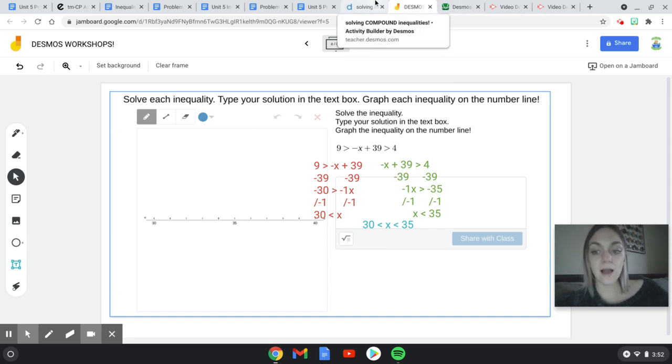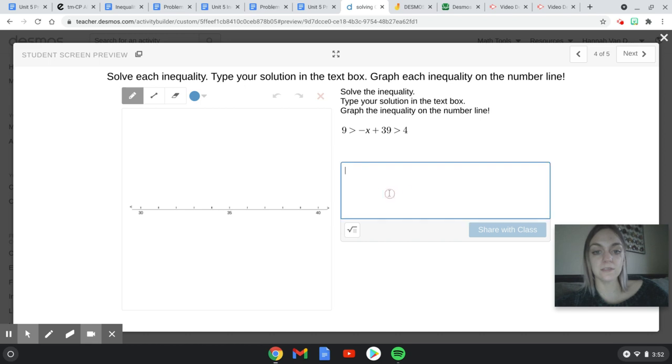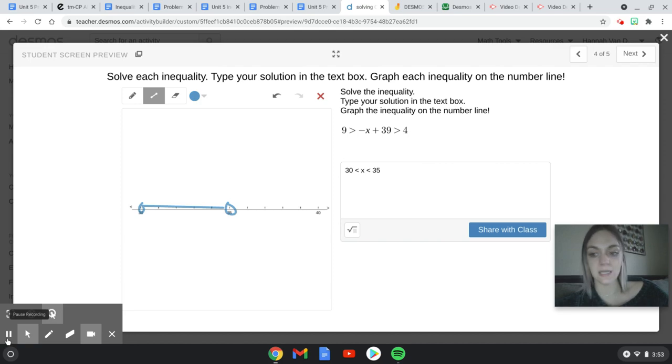Now I'm ready to graph my inequality on the number line. So I'm going to type this here so I don't forget. And I'm going to have an open circle at 30. I'm going to have an open circle at 35. Because this sign is just less than. If it were less than or equal to, my circles would be closed. And now I just have to shade in the middle. And I am done solving and graphing this inequality.